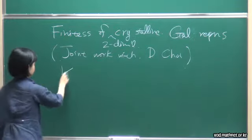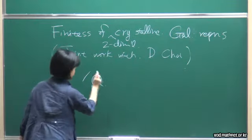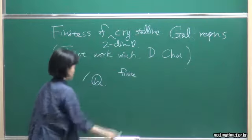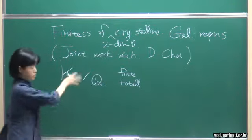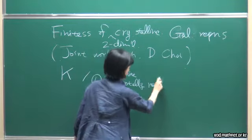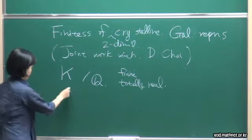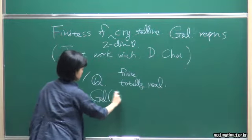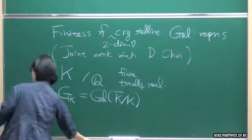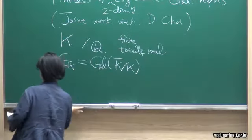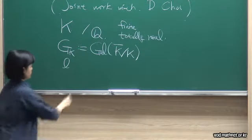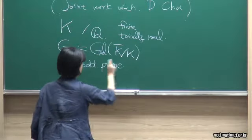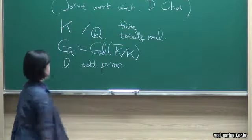Let me start from defining some notations. Let k be a finite extension, which is actually totally real, so that all the embeddings of k into the complex numbers should go to the real part. Then I define the absolute Galois group, let me write it g_k. And then let me choose a prime — I'll just choose it to be an odd prime, and this prime might vary. Usually the even primes, it's a different issue.